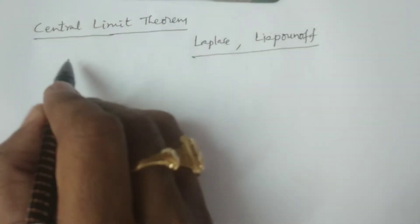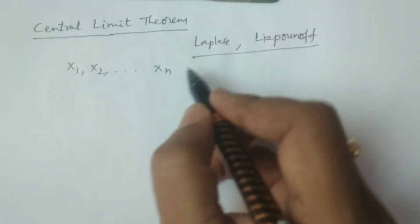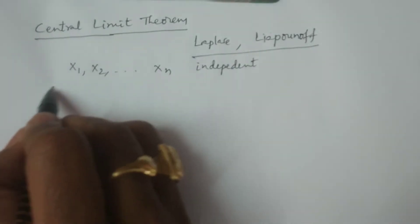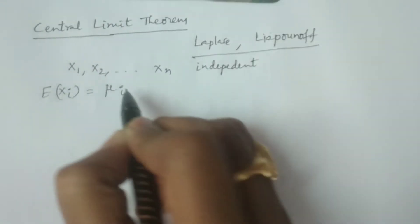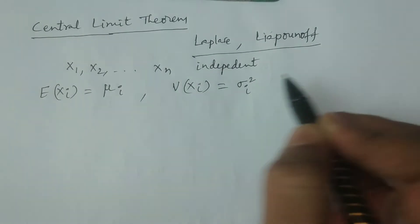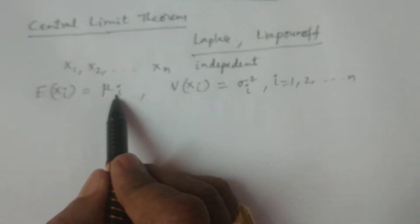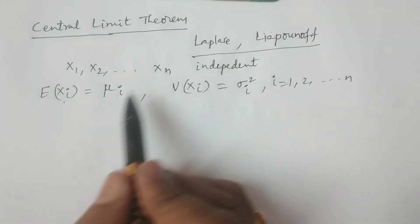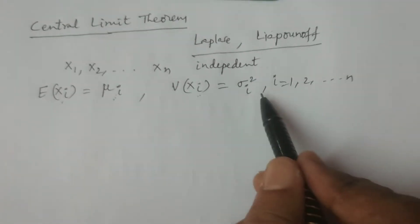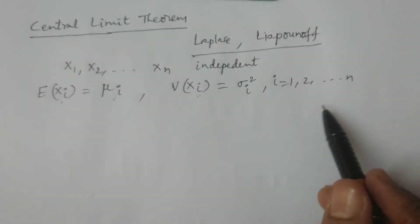What is the statement of the Central Limit Theorem? Consider x₁, x₂, and so on, xₙ are n independent random variables, with mean E(xᵢ) = μᵢ and variance Var(xᵢ) = σᵢ², for i = 1, 2, ..., n. That is, E(x₁) = μ₁, E(x₂) = μ₂, ..., E(xₙ) = μₙ, which are the means. Variance of x₁ = σ₁², variance of x₂ = σ₂², and so on, variance of xₙ = σₙ².